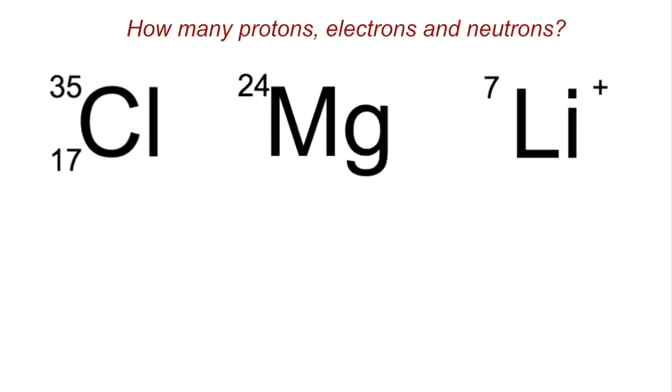All we're going to do is use these three nucleus symbols here to work out how many protons, electrons, and neutrons are in each of these. If you want to have a go at that, pause the video, and then when you're ready, play on and I'll go through the answers.